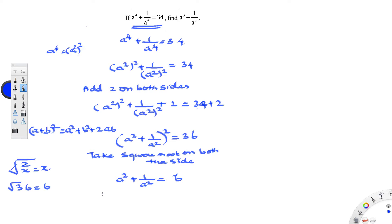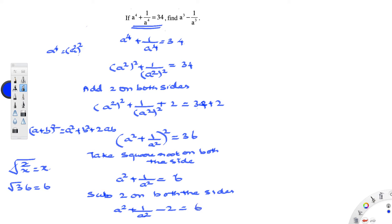Now let us subtract 2 from both the sides. We are subtracting 2 because we are dealing with a square, and we have to make sure this number, when you take a square root, gives a proper perfect square. So if I subtract 2 from 6, it becomes 4. You get a square plus 1 by a square minus 2 is equal to 6 minus 2.